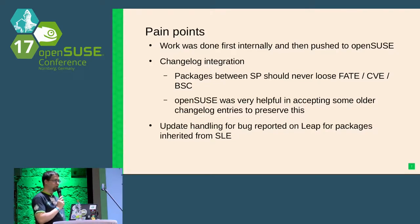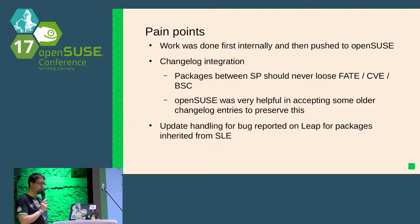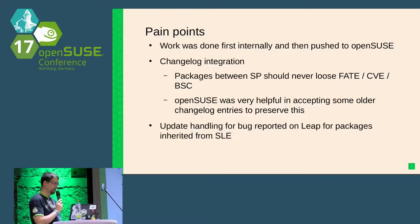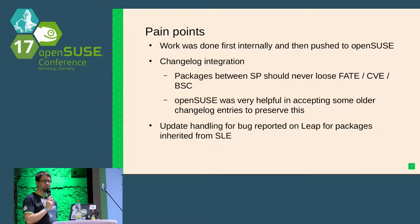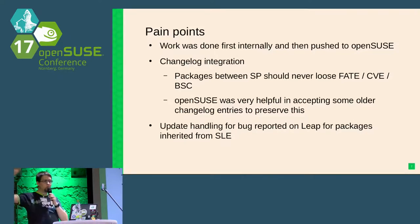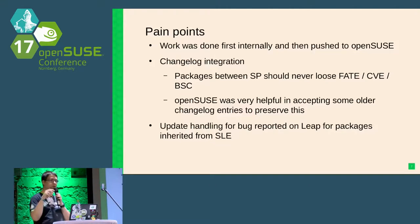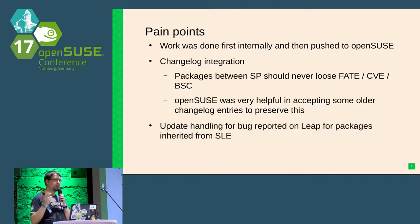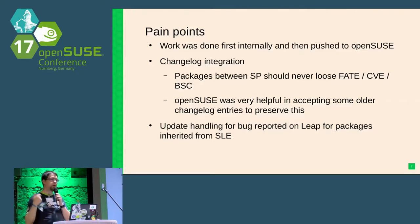We also had some horror stories — Ludwig mentioned it earlier today about changelog integration. We have rules at SLEE that when you update a package between service packs, you should never lose a bug report number, a fate number, or a CVE number in the changelog. Why? To make sure that when upgrading a package you don't lose a feature developed as a patch or a bug fix specific to one customer which was maybe never pushed back to factory. It's very important to track that we never regress in terms of bug reports, features, and security fixes.